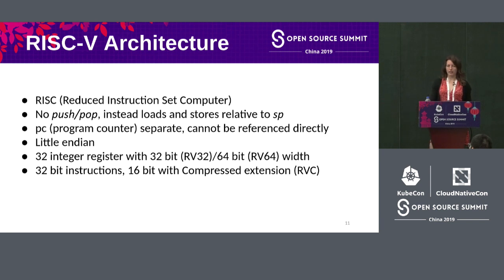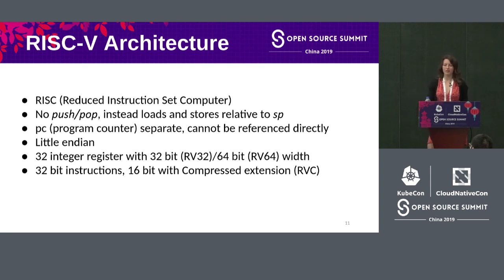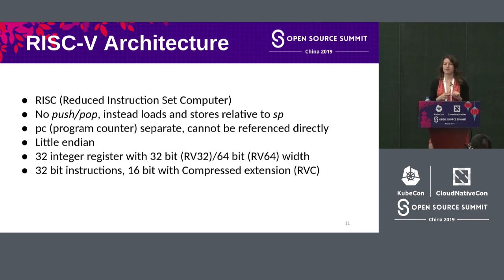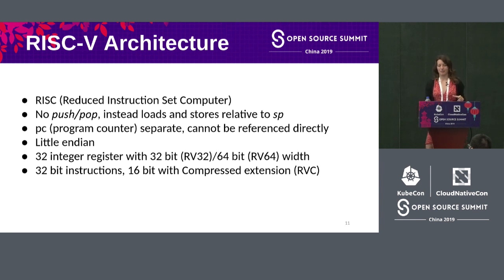RISC-V has a modular approach: there's only one minimal instruction set that is obligatory to implement, and everything else is optional. The minimal set has jumps, branches, logical operations, add and subtract. Optionally you can add integer multiplication, floating point operations, vector operations, a 64-bit instruction set, and a 128-bit instruction set is currently in the works. There's also a compressed extension that uses two bytes per instruction instead of four.